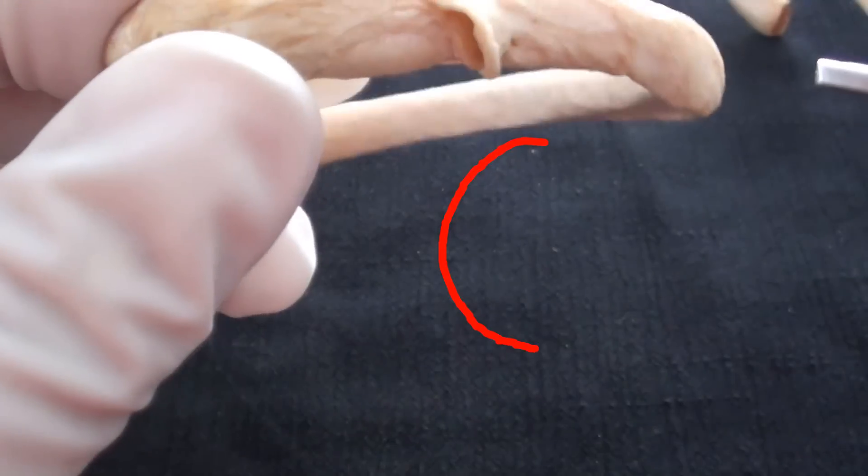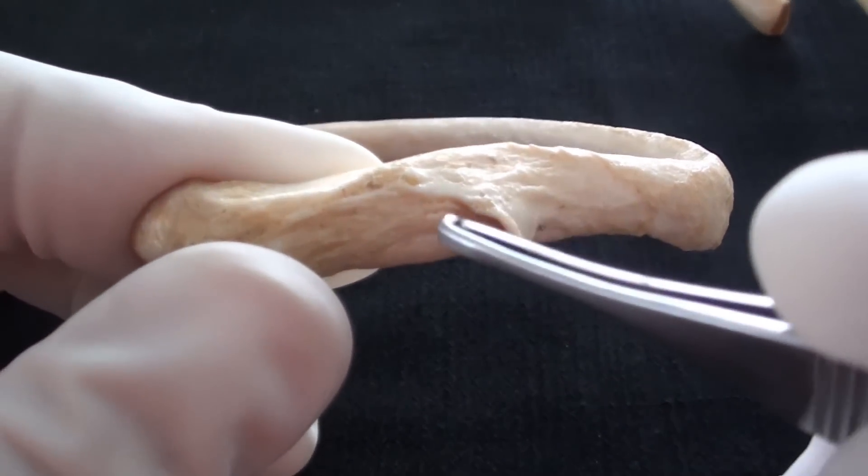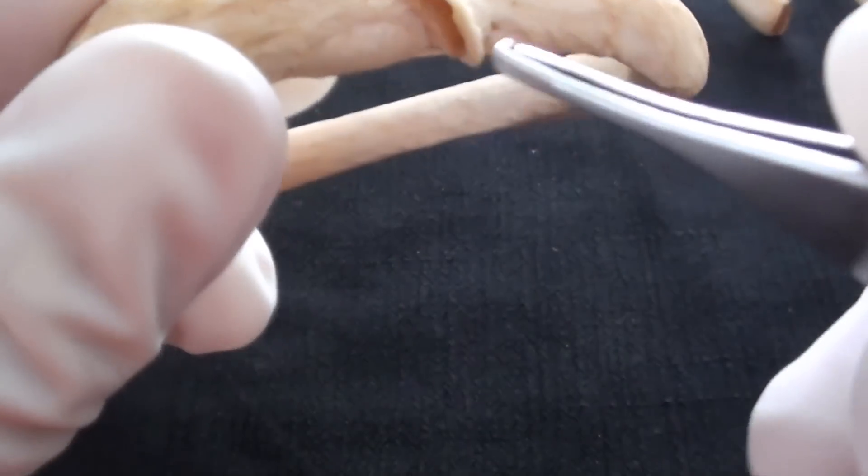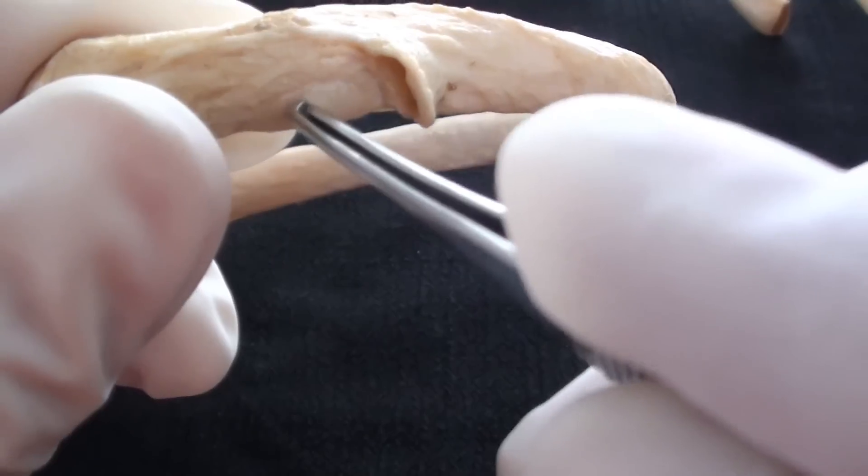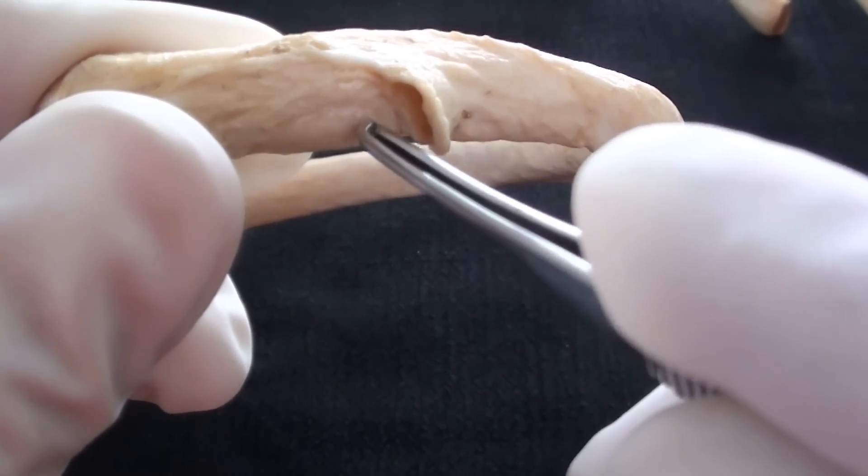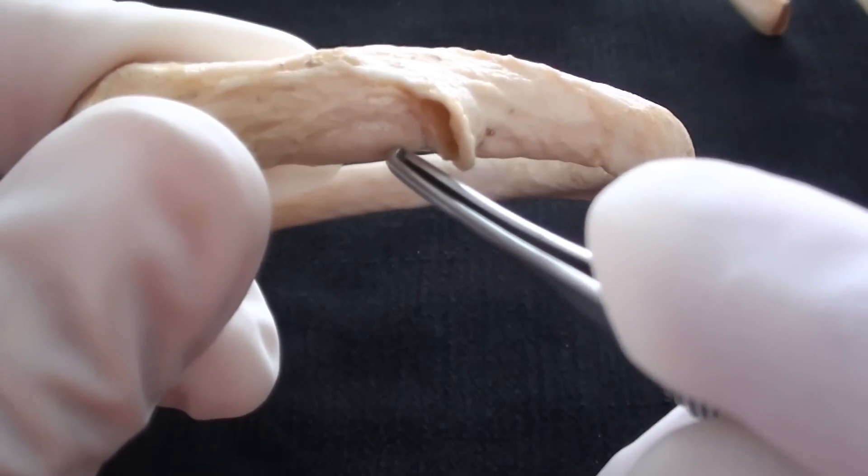The tubercle has two different parts, the articular part and the non-articular part. Articular part will have a nice smooth facet that will make the contact with the facet on the transverse process of thoracic vertebra.